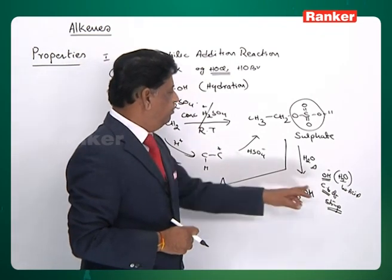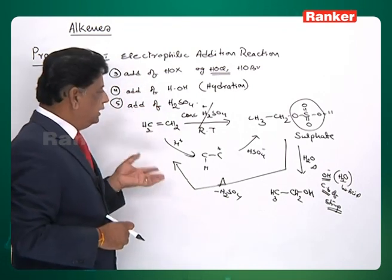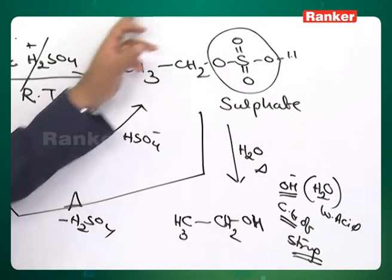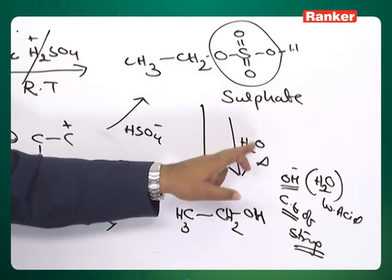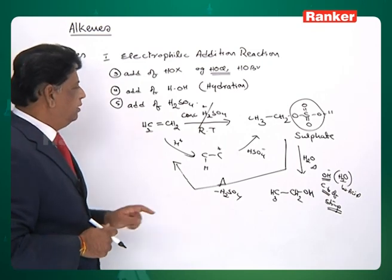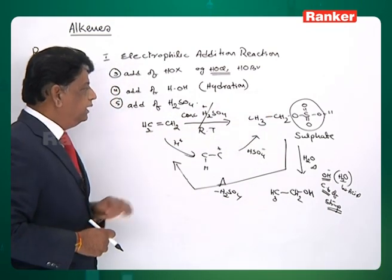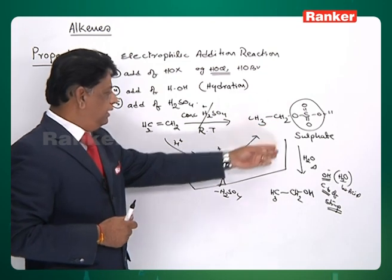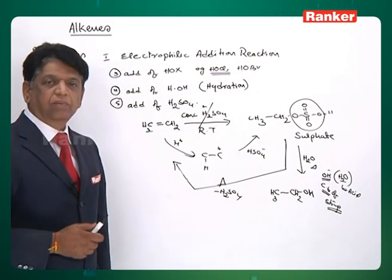Without adding water, if you just heat the ethyl hydrogen sulfate, decomposition takes place and ethylene is regenerated — sulfonated products are not stable at higher temperatures. This leads to an important application: if you have a mixture of ethane and ethylene gases, pass them into concentrated sulfuric acid at room temperature. The ethylene reacts with sulfuric acid to form ethyl hydrogen sulfate and dissolves, while ethane (an alkane) does not react and comes out first.